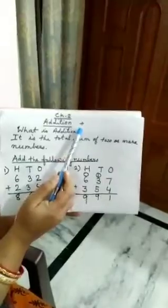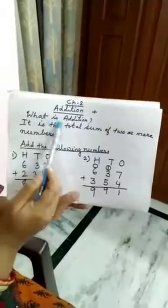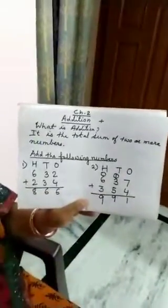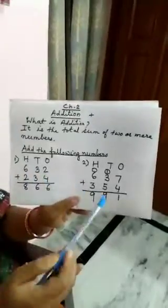See, what is the symbol or sign of addition? This, plus. What is addition? It is the total sum of 2 or more numbers. This is called addition. Now see few examples.